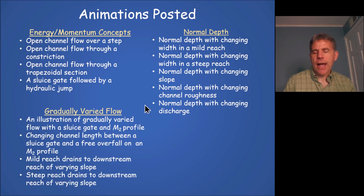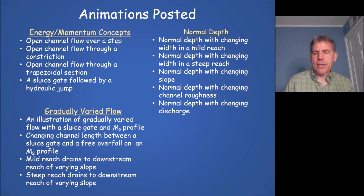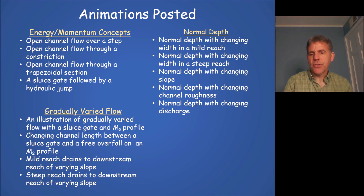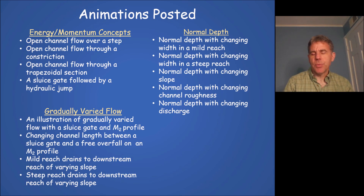A last general class of animations I created are for gradually varied flow. In these animations, I illustrate, for instance, a sluice gate and an M2 profile — basically, the sluice gate is slicing into an M2 profile. In another case, a sluice gate is fixed with an M2 profile, but there's a free overfall approaching the gate. There is the case of a mild reach draining a downstream reach of varying slope, and the alternative case of a steep reach that drains to a downstream reach of varying slope.